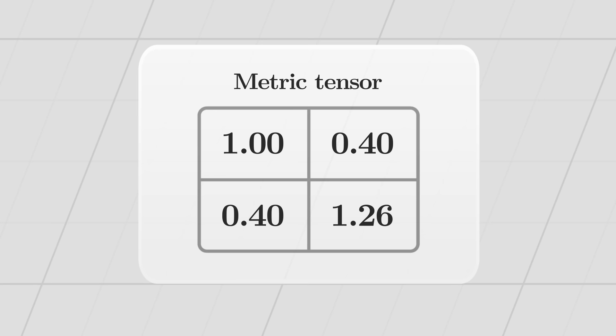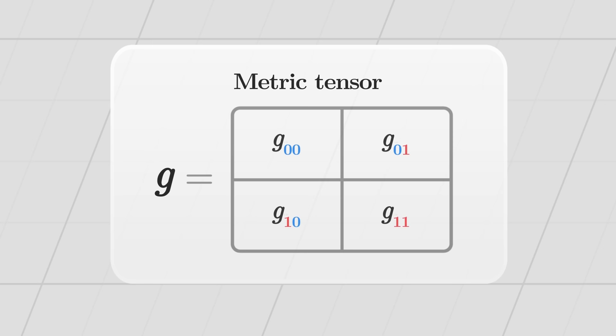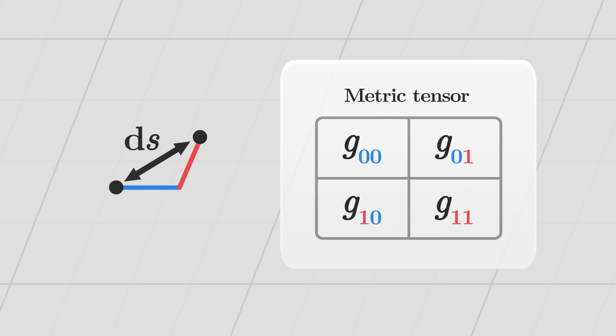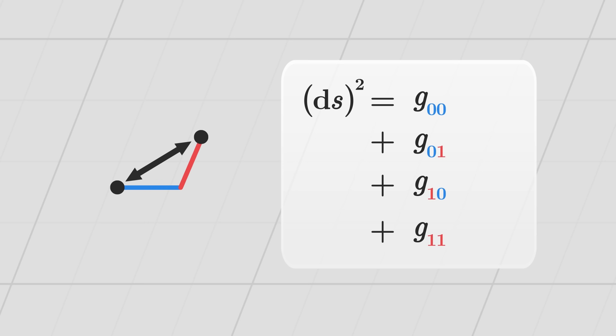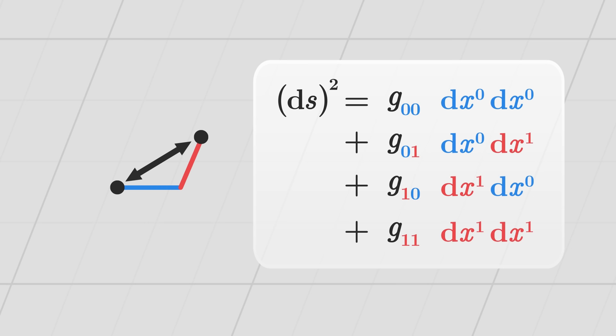Usually, this table is called G, and its components are numbered by two indices. We can therefore write the square of the distance which separates two points, as the sum of each component of this table, multiplied by the corresponding differences in the coordinates between the points.